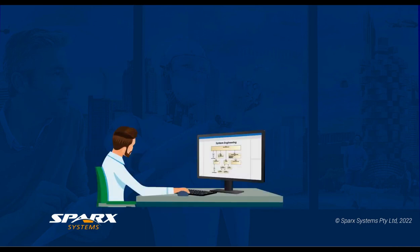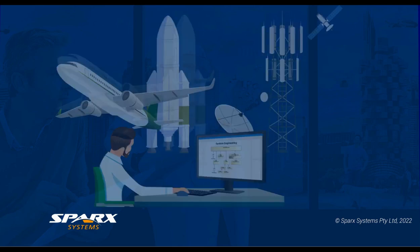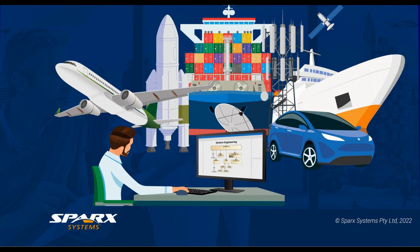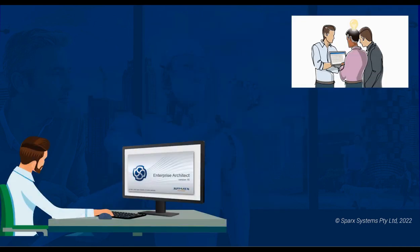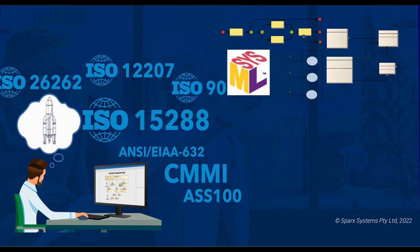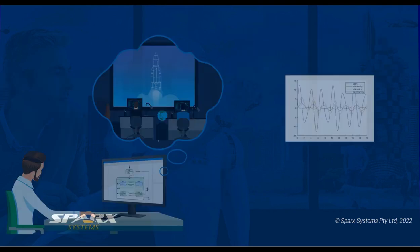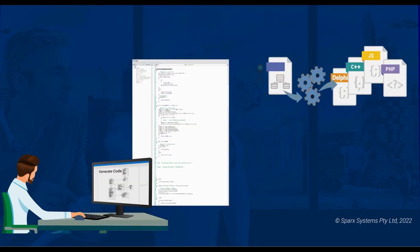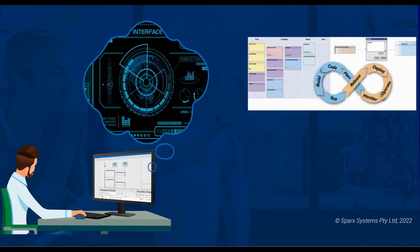Systems engineering is applied across a wide range of industries, including the aerospace, telecommunications, automotive and maritime industries. In this webinar series, we will cover how to use Enterprise Architect to lay out the design using systems engineering standards, simulate the design, as well as options to generate code and test any software from design through to production.